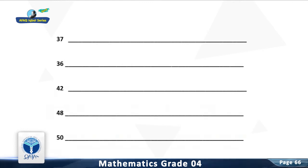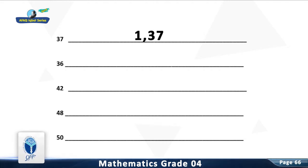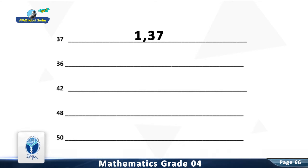Question 6: You are right. 37 is a prime number. It has only two factors: 1 and 37.